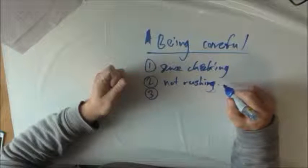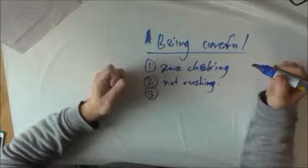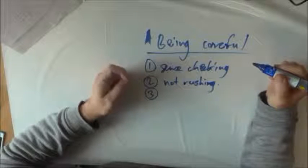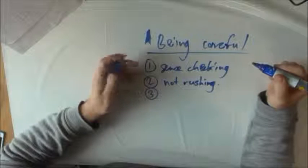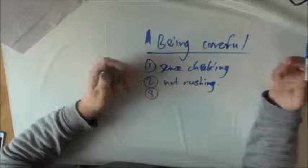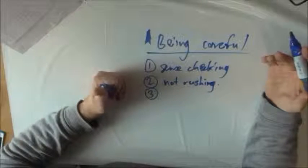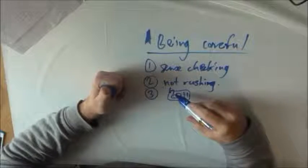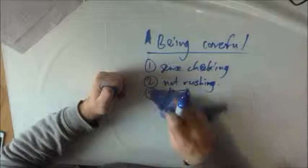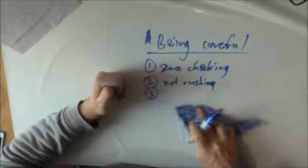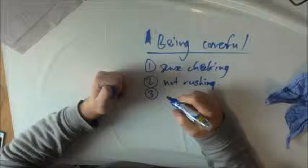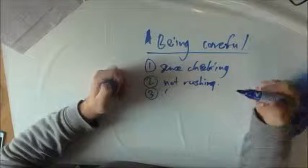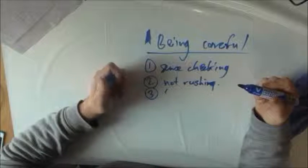One exercise you can do to make this point really clear to you is just take a really simple exam, maybe from a year that you're no longer in. Or if it's just for the GCSE, take a simple pass paper, probably the easiest year for GCSE was 2011, and just rush through it and then mark it yourself and see how many stupid mistakes you made. What I'm saying here is that this will then confront you with just how much of a big issue this is for you.